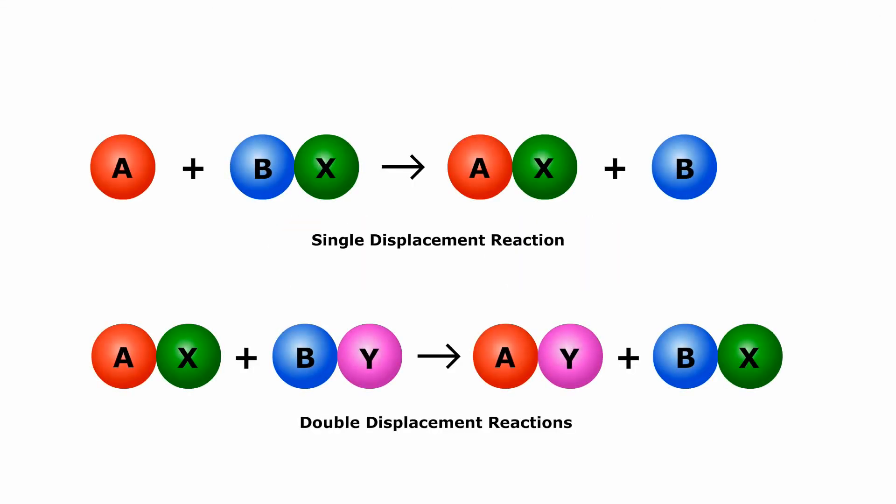Thus, the basic difference between single and double displacement reaction is that in a single displacement reaction, only a single reactant undergoes displacement. Whereas, in a double displacement reaction, both the reactants undergo displacement.